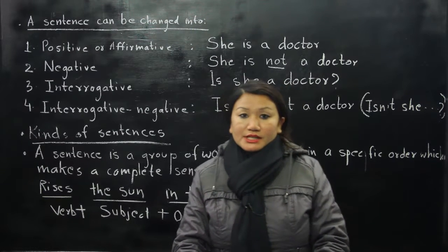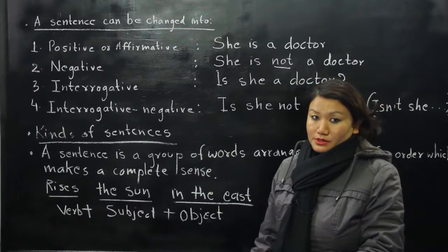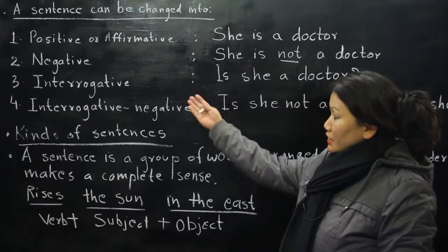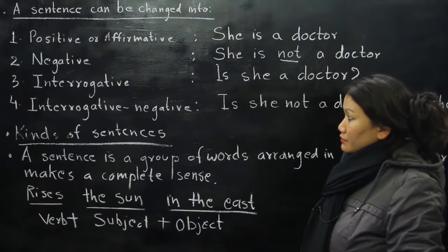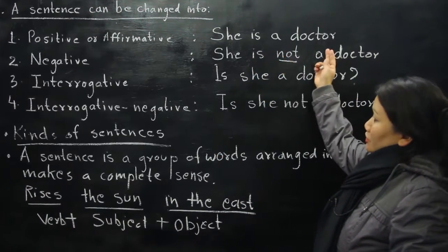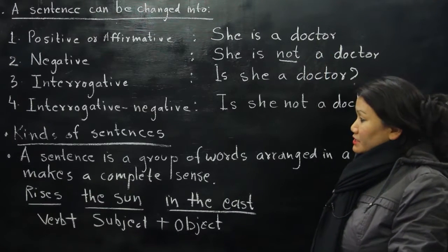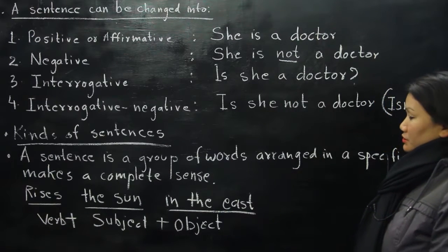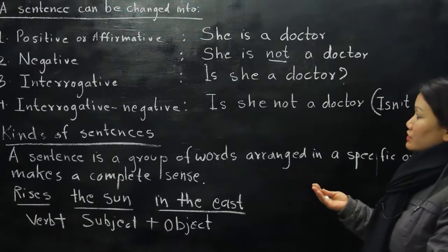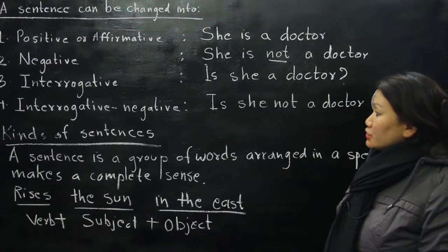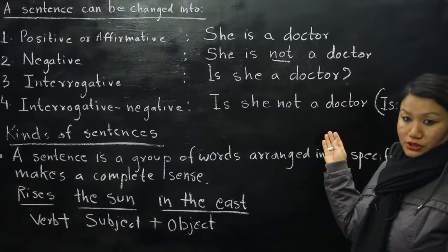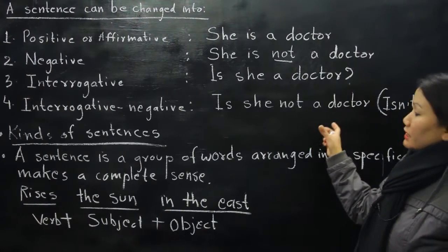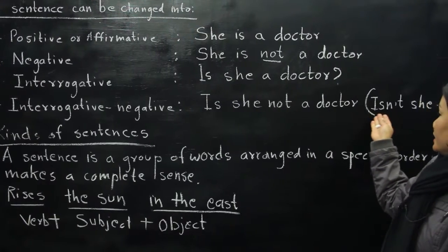A sentence can be changed into the following types: first, positive or affirmative; second, negative; third, interrogative; fourth, interrogative negative. For example, 'She is a doctor' is a positive or affirmative sentence. To make it negative, we use 'not': 'She is not a doctor.' To make it interrogative: 'Is she a doctor?' For interrogative negative: 'Is she not a doctor?' When we combine the auxiliary verb and 'not,' it becomes a contraction: 'Isn't she a doctor?'